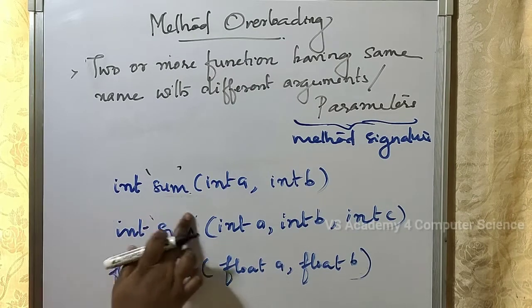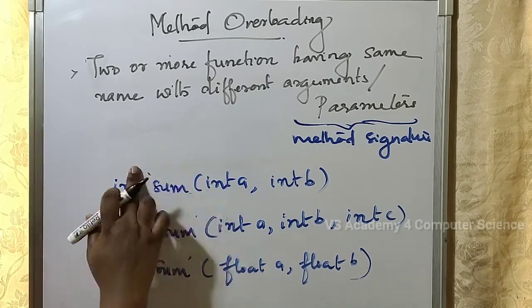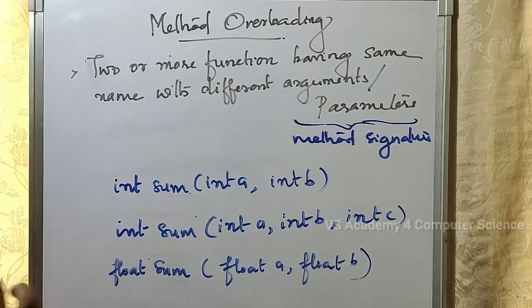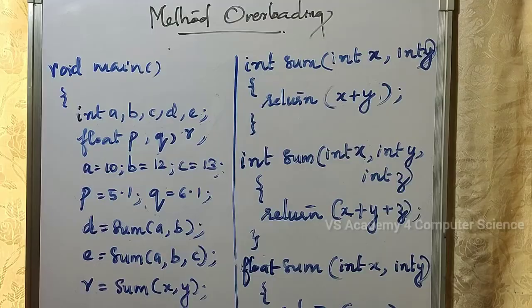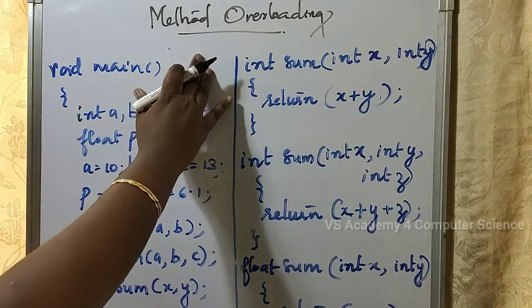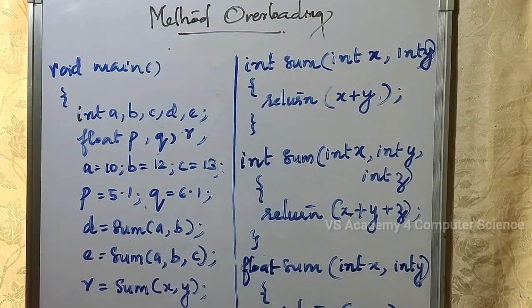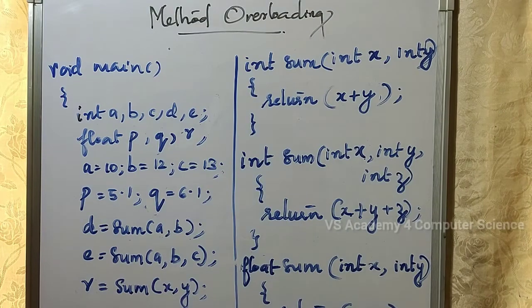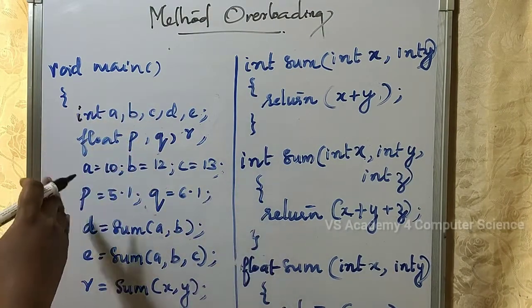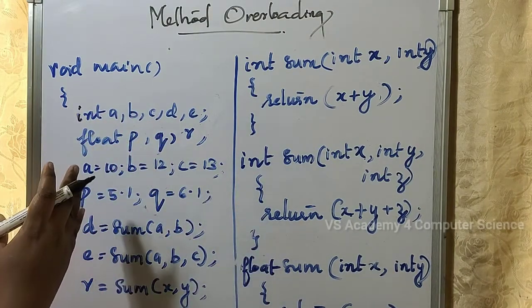I will explain how method overloading is implemented in a program. We are going to discuss a simple example — a sum example — to show how method overloading is implemented.